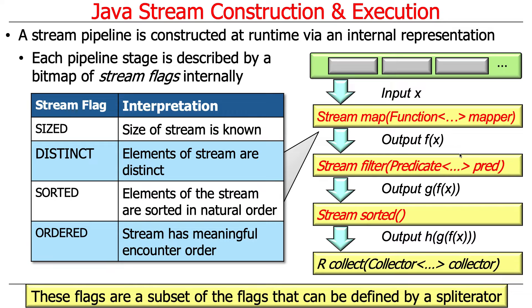Here are some examples of the different flags: sized, distinct, sorted, and ordered. The size flag, if set, indicates that for this particular operation the size of the stream is known. We'll talk more about what it means for a stream to have a known size in a moment.